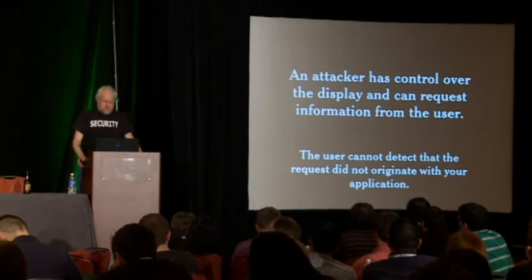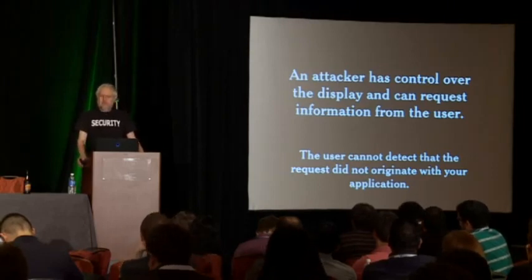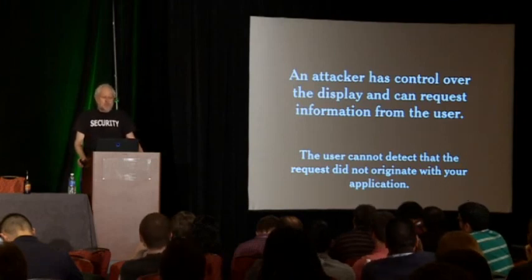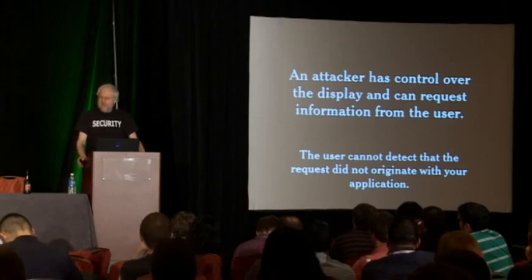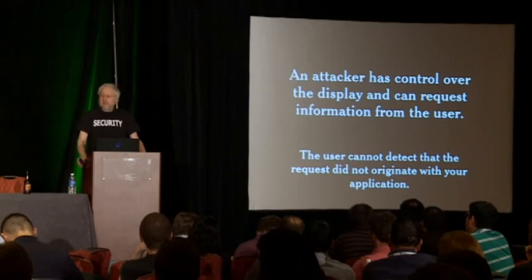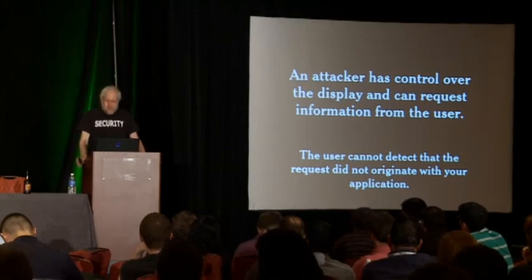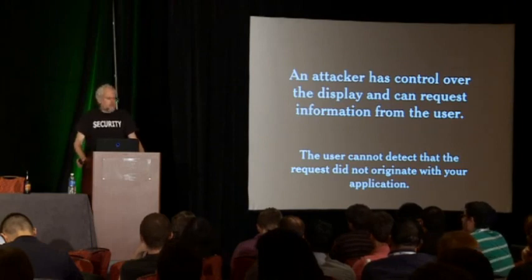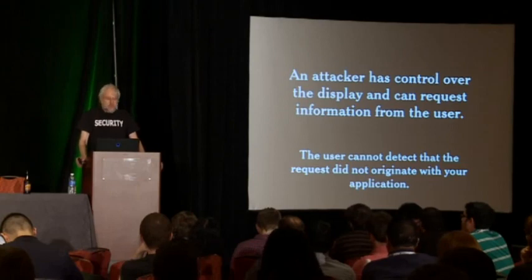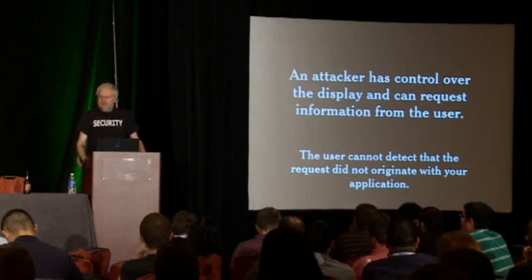The attacker has control over the display and can request information from your user, and the user cannot detect that the requests did not originate with your site. Many browsers now have anti-phishing chrome, but most users don't pay attention to it — and in this case it will tell them to go ahead, because this is a legitimate site. The browser only looks at where the HTML came from, not where the script came from or whose interest it represents. Some sites will ask for a password when the user does something potentially dangerous — but the attacker has control of the display, so the attacker can ask for the password too. And if your site routinely asks for passwords at unexpected times, you're conditioning users to give it up as soon as the attacker asks.